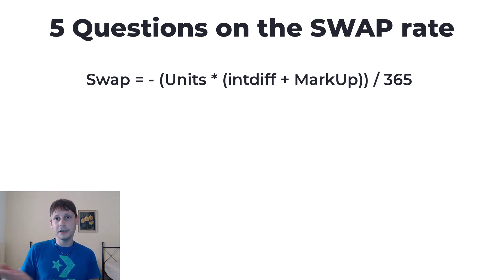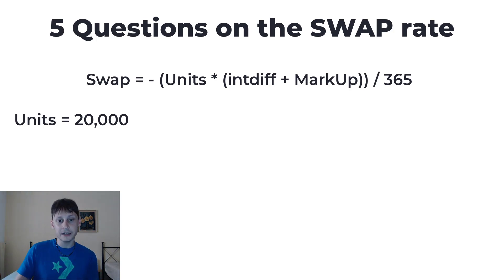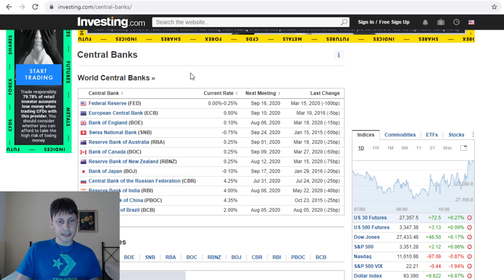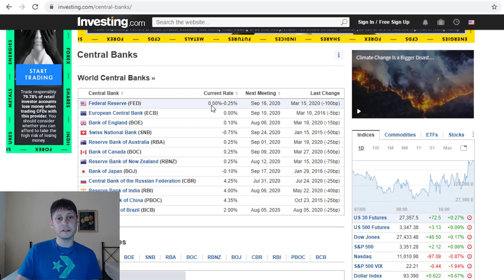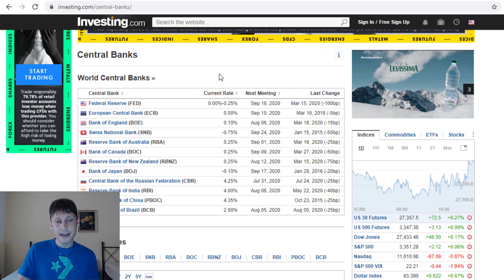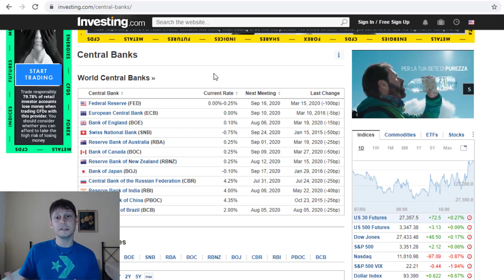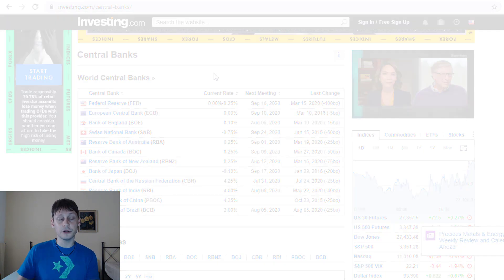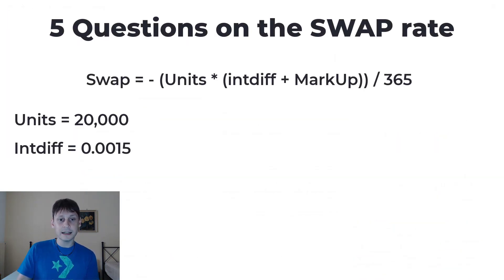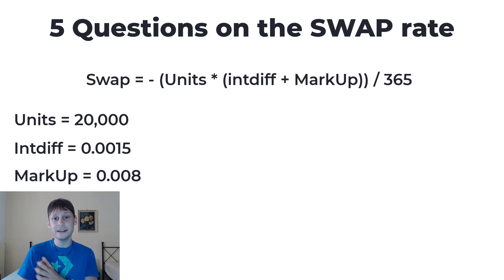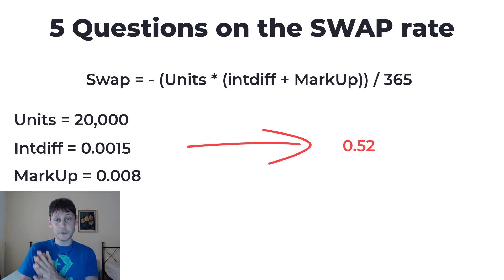The contract size in units for 0.20 lots is 20,000. Then we multiply by the difference between the two interest rates. On investing.com we can see the Federal Reserve rate is from 0 to 0.25% — we'll use 0.25% — and the Bank of England rate is 0.10%, so the difference is 0.25 minus 0.10, giving us 0.15%, or 0.0015 in the formula. The broker markup is typically between 0.05% and 1%; in this example we use 0.008. Dividing everything by 365, the result is 0.52.